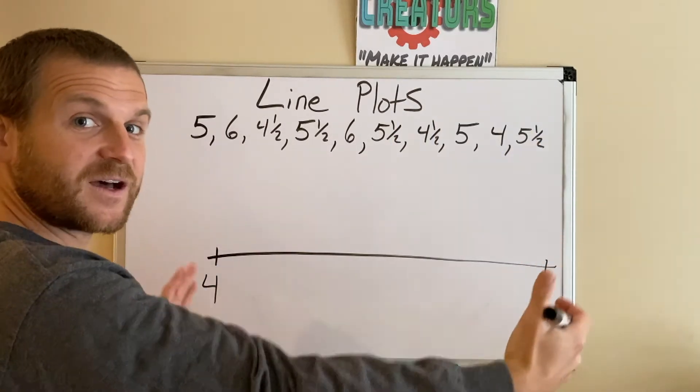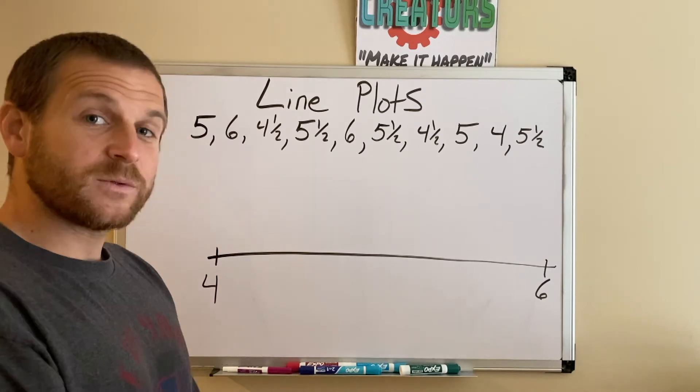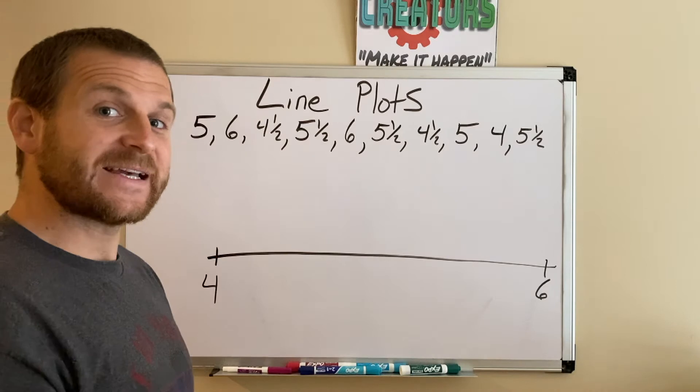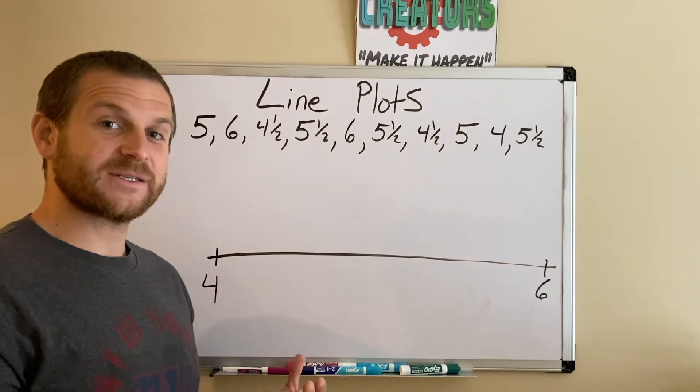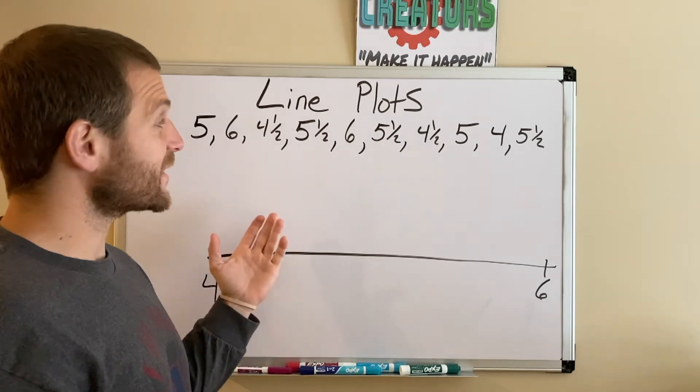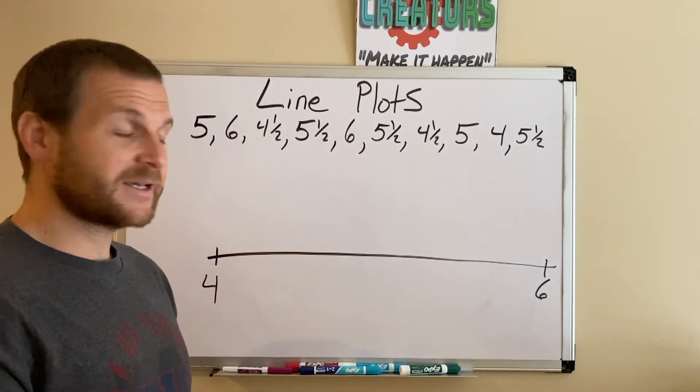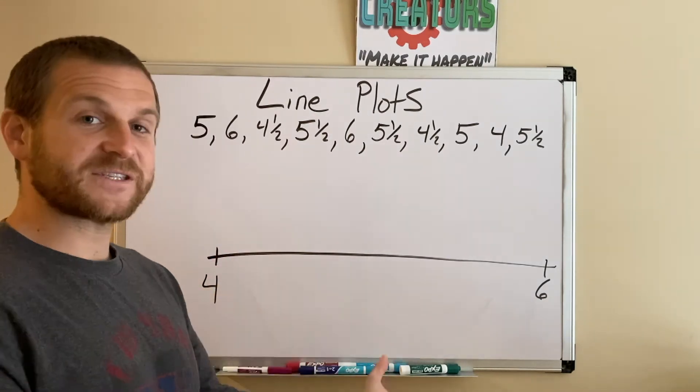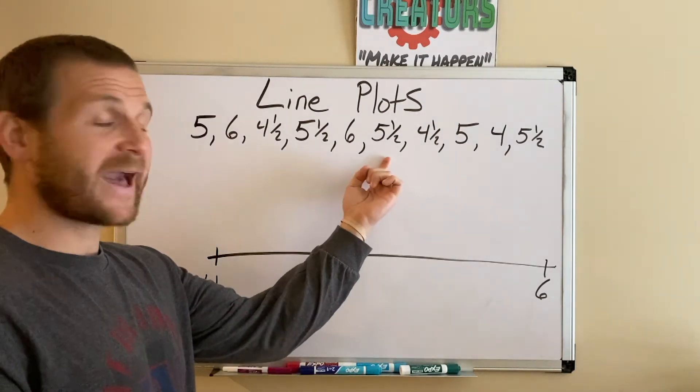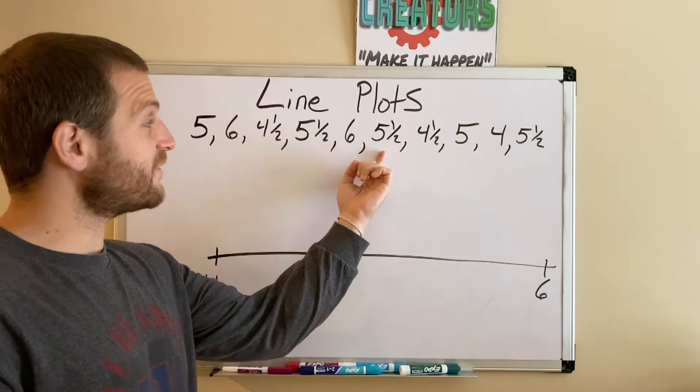Now instead of just putting 5 in the middle and going 4, 5, 6, I need to know by what increments I counted or the data is counted. If I look, it doesn't just count by seconds, otherwise I could just put 4, 5, 6 and be done. But it doesn't count by seconds - there's also halves in here, so I have 5½ and I have 4½.